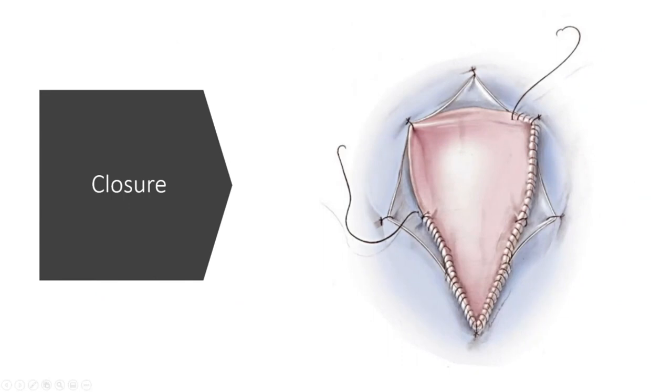Usually for Chiari malformation, for example, after I decompress the tonsils and the floor of the fourth ventricle, then you inspect the obex, you see the floor of the ventricle, you make sure everything is okay, and you can put a very loose dura graft which is sewn in place in a watertight fashion.